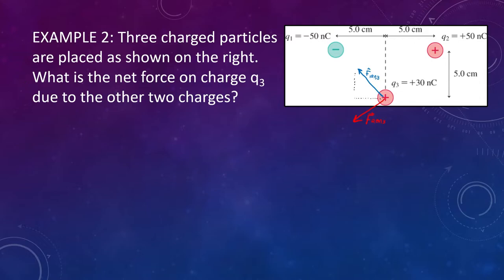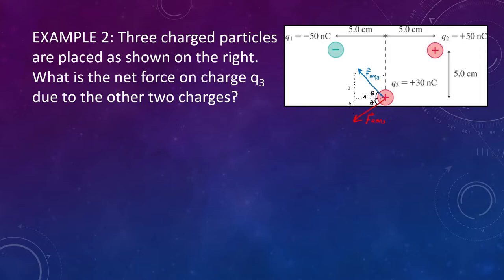We can form little triangles to help visualize this — we have X and Y components to deal with, and an angle on each. For this example, we have 5 centimeters away and 5 centimeters away vertically, so the two sides of the triangle are both 5 centimeters, which means this is a 45-45-90 triangle and theta is 45 degrees. To verify, use inverse tangent of Y over X: inverse tangent of 5 over 5 equals inverse tangent of 1, which is 45 degrees.